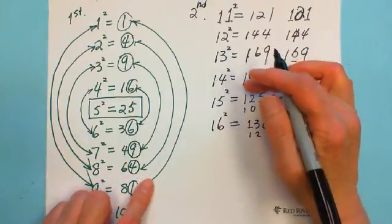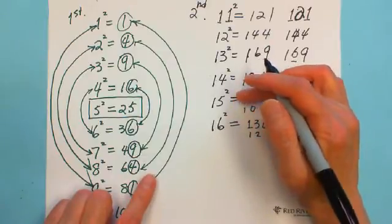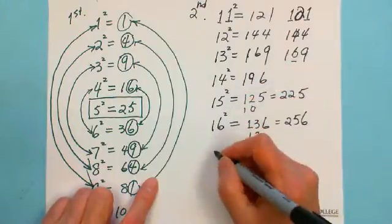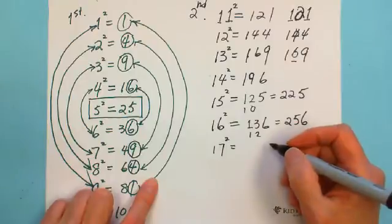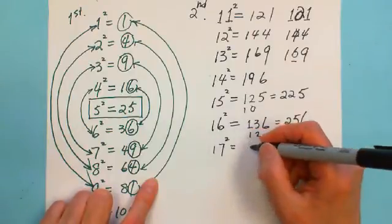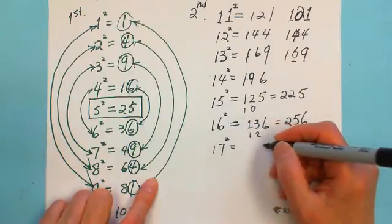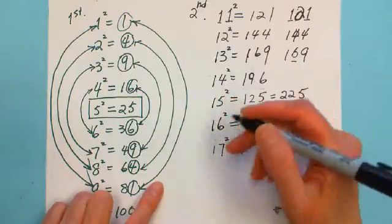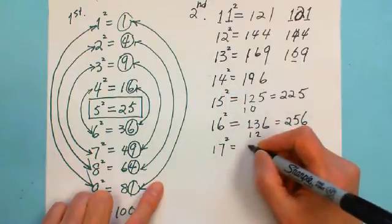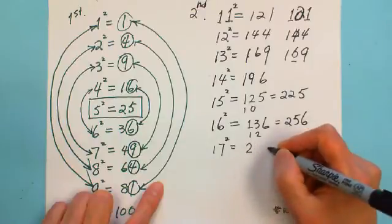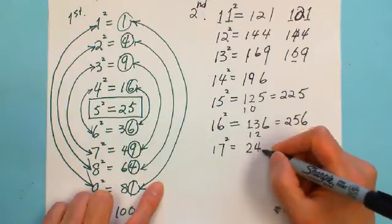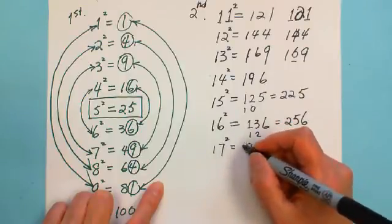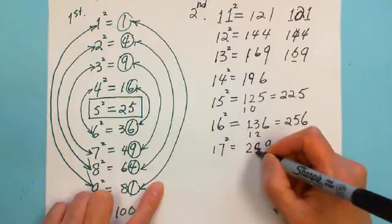After a number greater than 5, you need to add 1 to the first digit's result. For example, 17 squared: 1 squared is 1, 7 squared is 49. Because it's past 5, you add 1 — so you get 2 in front with 49. And 2 times 7 is 14, so you carry the 1. The result is 289.